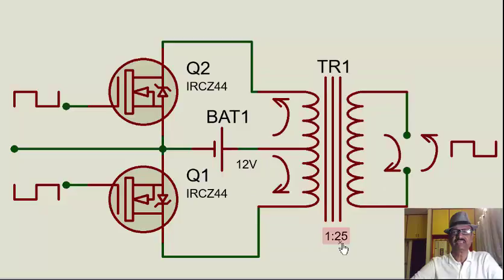We have a transformer here which has a ratio of 1 to 25. That means from this winding to this winding, if we apply 10 volts, we will get 250 volts.